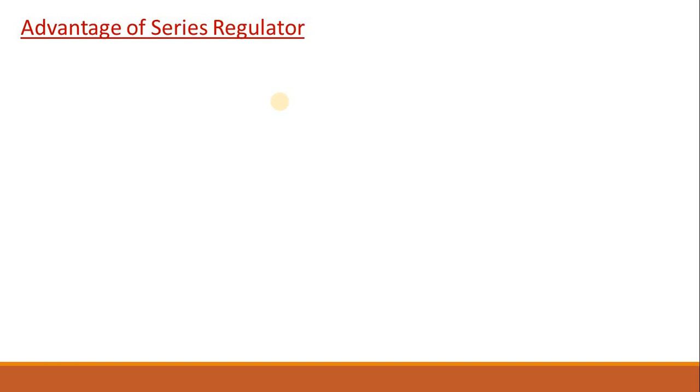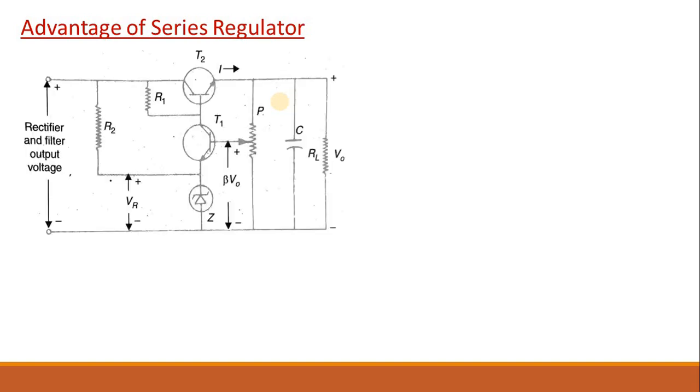Now, what is the advantage of this series regulator? Can we rectify some of the disadvantages of the Zener diode as a voltage regulator? You can look at this picture again and we know βV₀ is equal to VR plus VBE. From here, we can write V₀ as 1 by β times VR plus VBE.